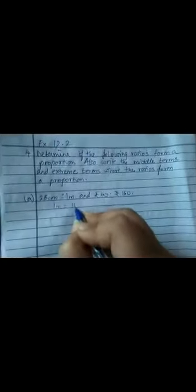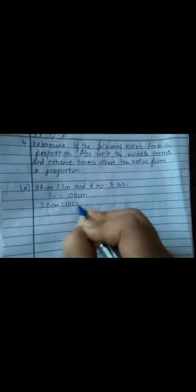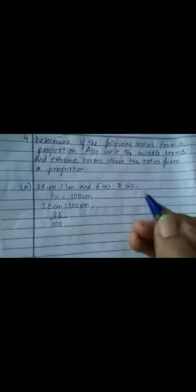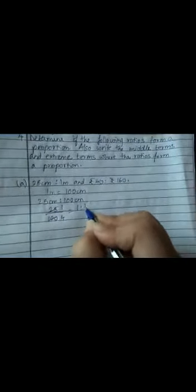1 meter is how much? Yes, 100 centimeters. So for 25 centimeters, I will take 100 centimeters. It will become 25 upon 100. 25 ones are 25, fours are... So my ratio is 1 is to 4.